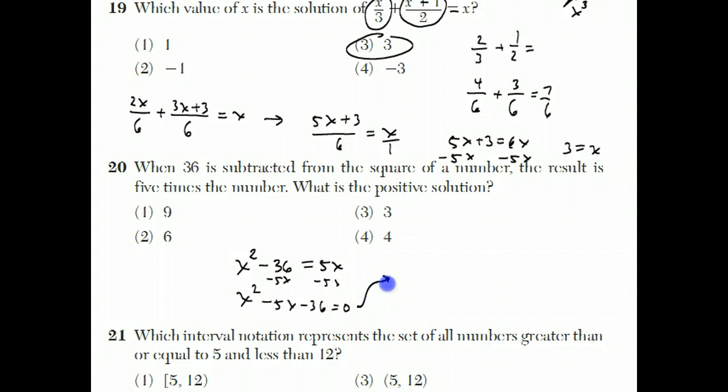Now the way to answer this question is to factor. And factoring is when you figure out what two things multiply to become x squared minus 5x minus 36. You need an x and an x to become x squared when you do FOIL. Now we need to find two numbers that multiply to give us negative 36, and add to give us negative 5. Those two numbers are negative 9 and positive 4.